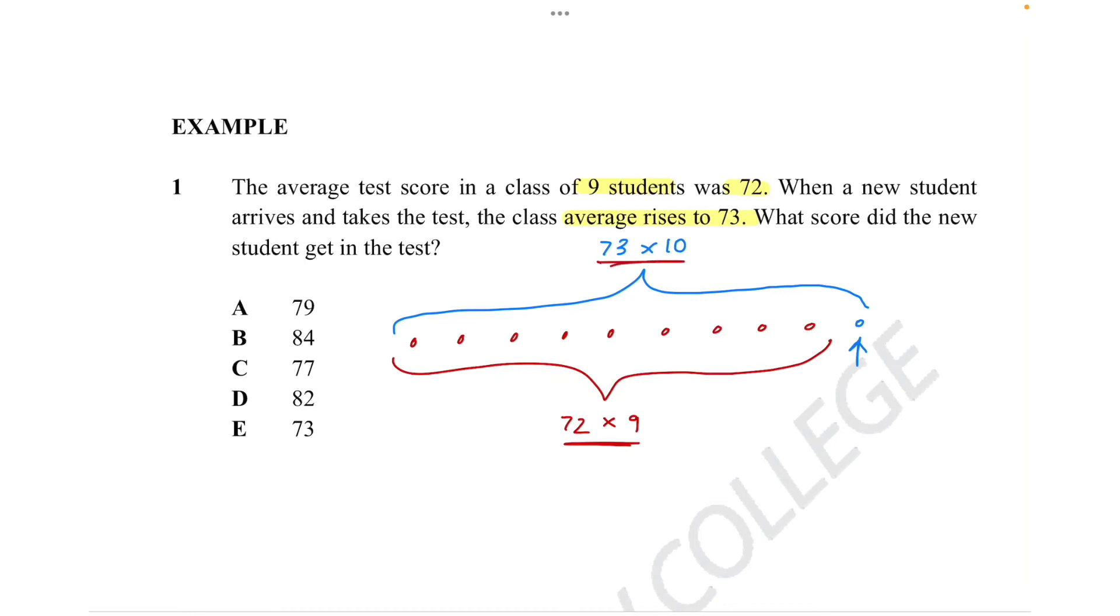So let's write this out in an equation. So 73 times 10, which is the new total score of the class, minus 72 times 9, equal to the score of the new student. Okay, now we just need to calculate this.